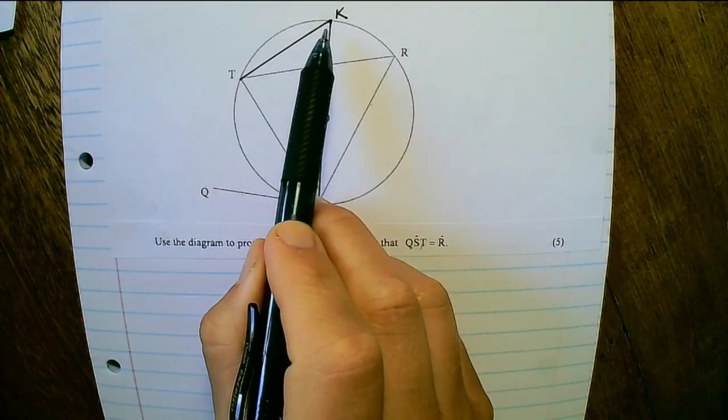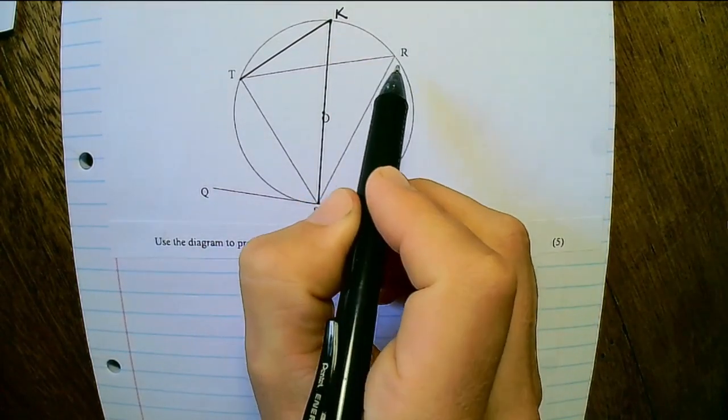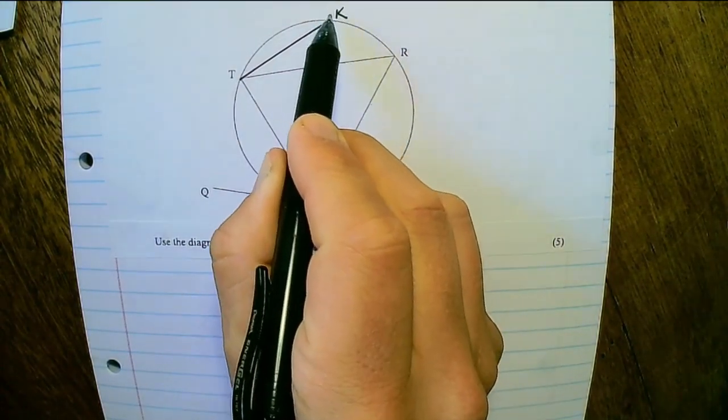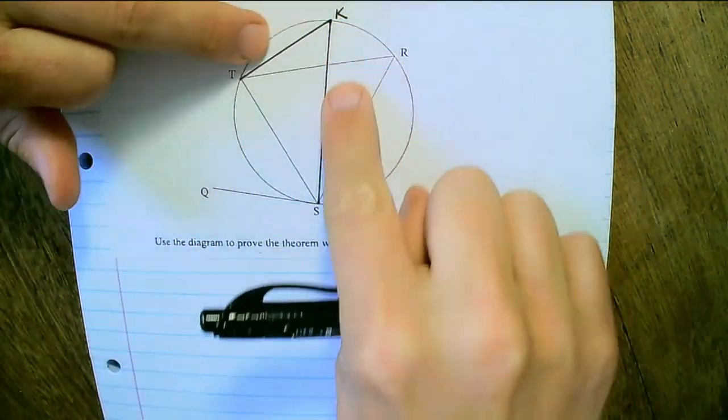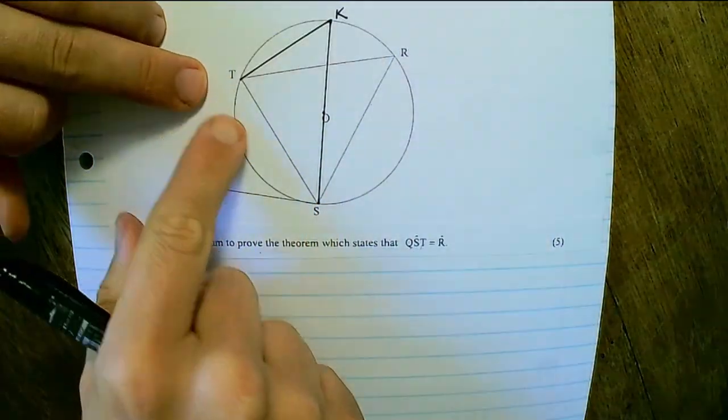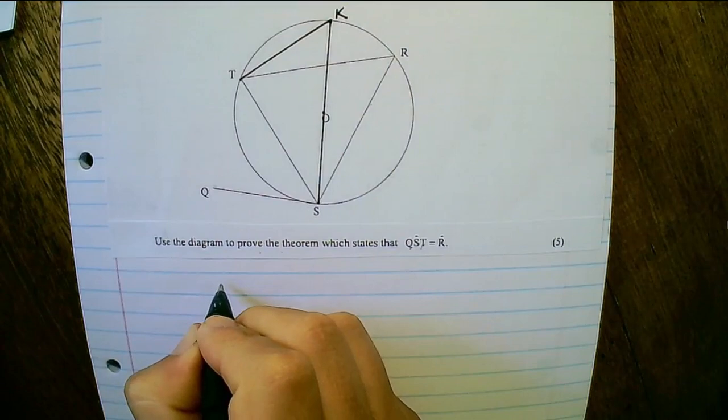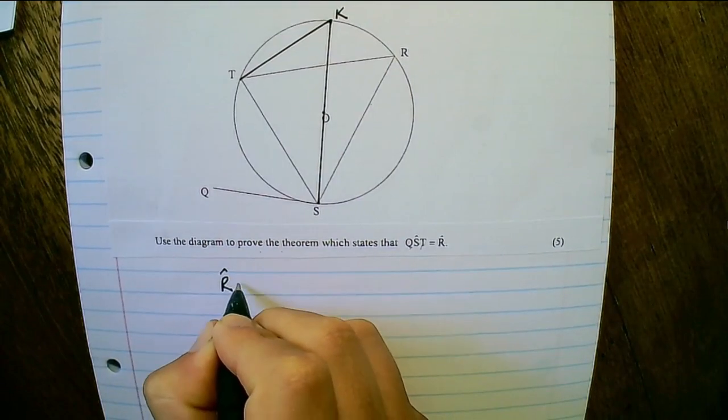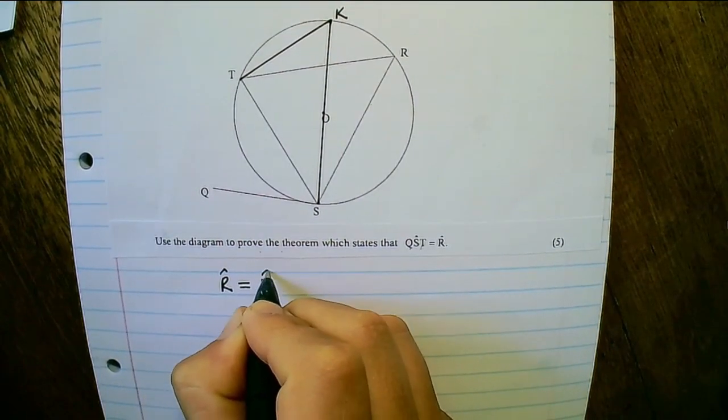Then I'll connect that line to T. Then from this construction I can see that angle R is equals to angle K, because they both are subtended from TS.